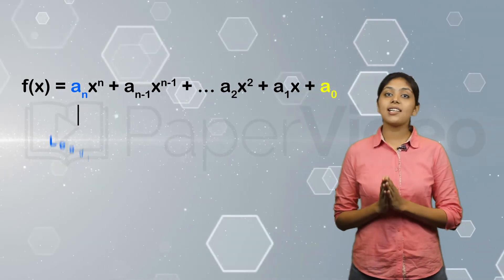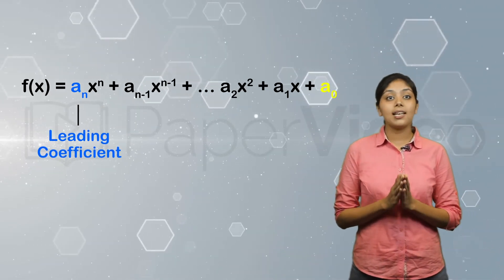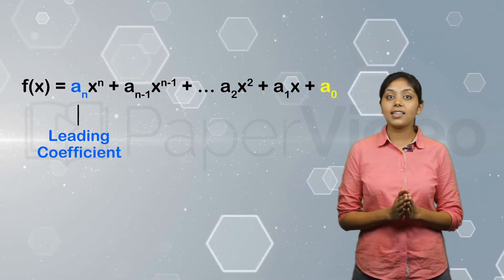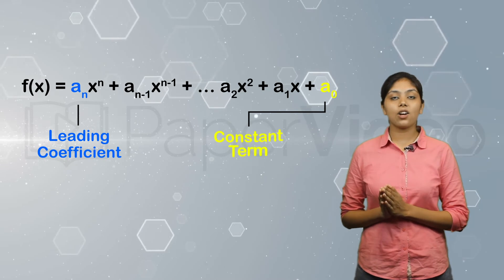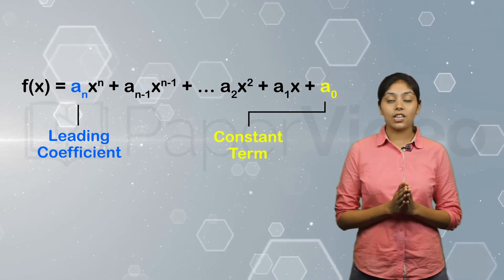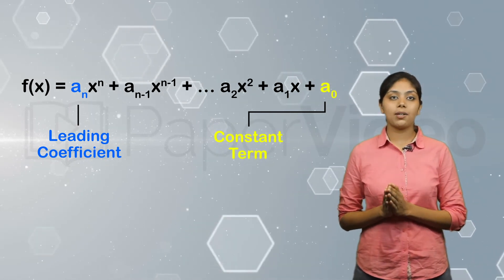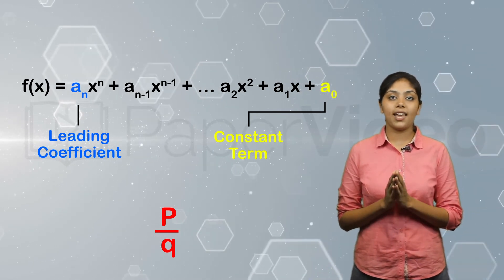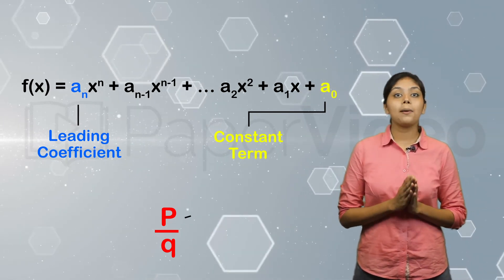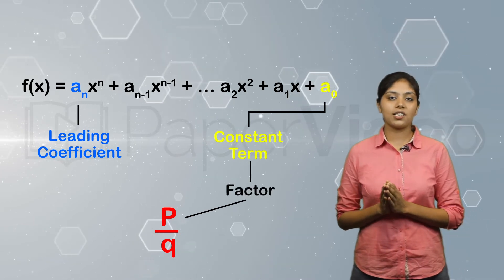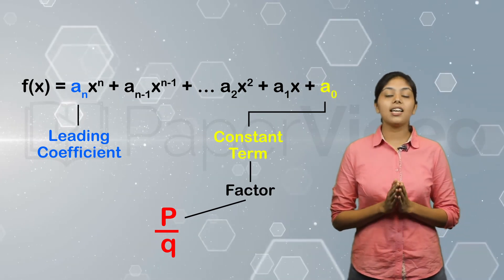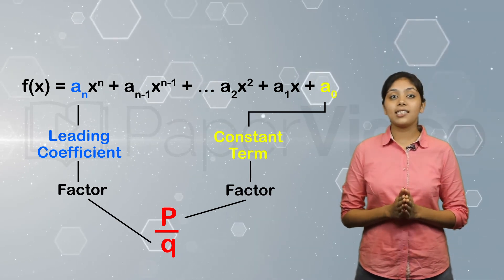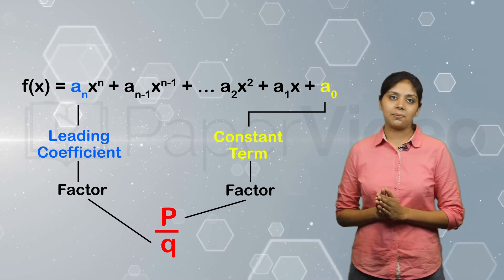Here, an is known as the leading coefficient because it is the coefficient of the highest power of x, and a0 is known as the constant term. According to the theorem, if a rational number p over q is a root or zero of a polynomial f(x), then p is a factor of the constant term a0 and q is a factor of the leading coefficient an. This is known as the Rational Root Theorem.